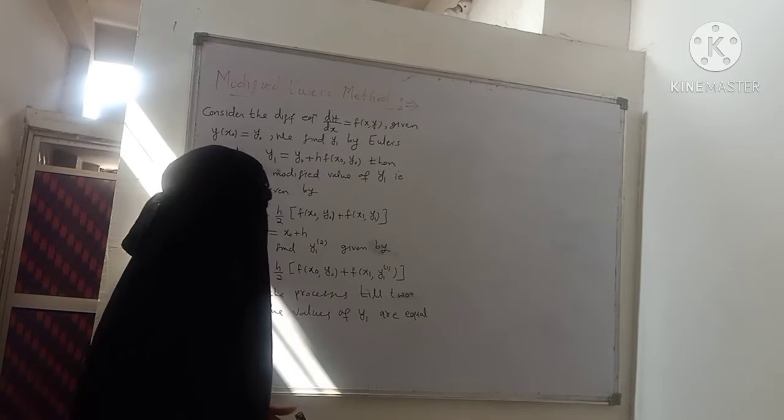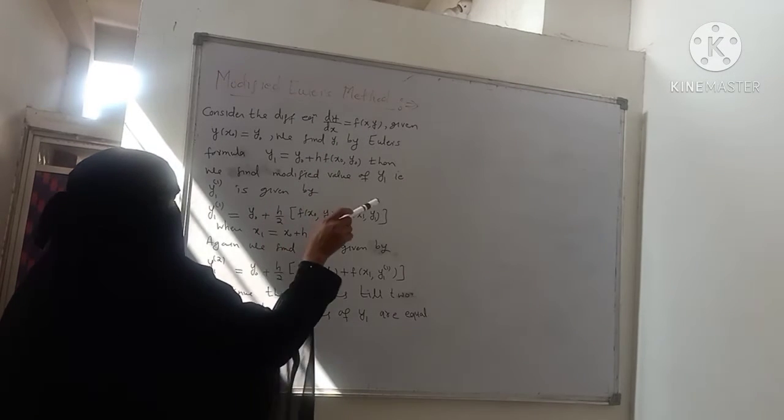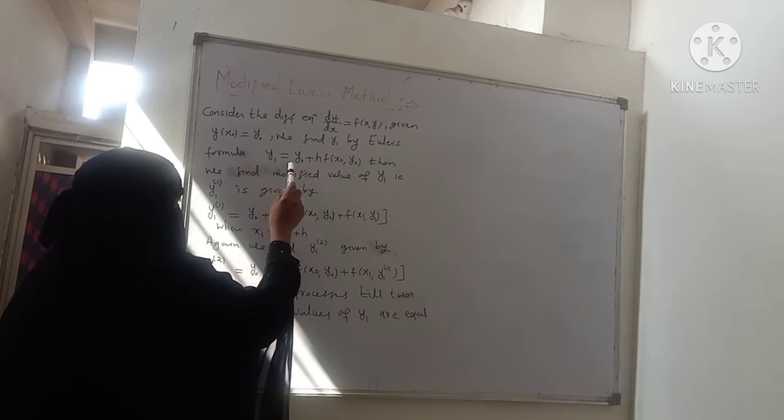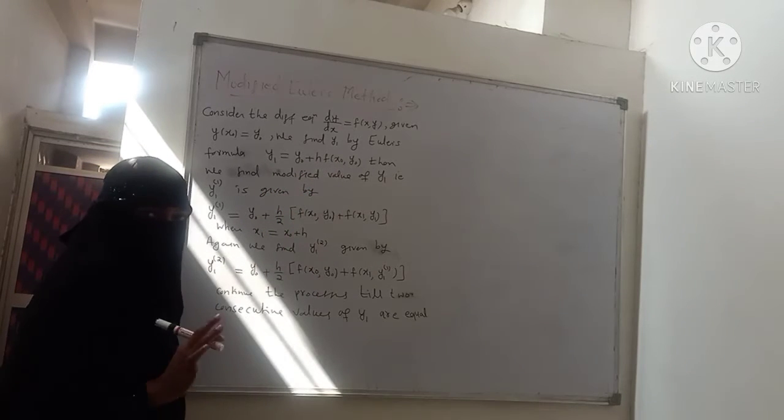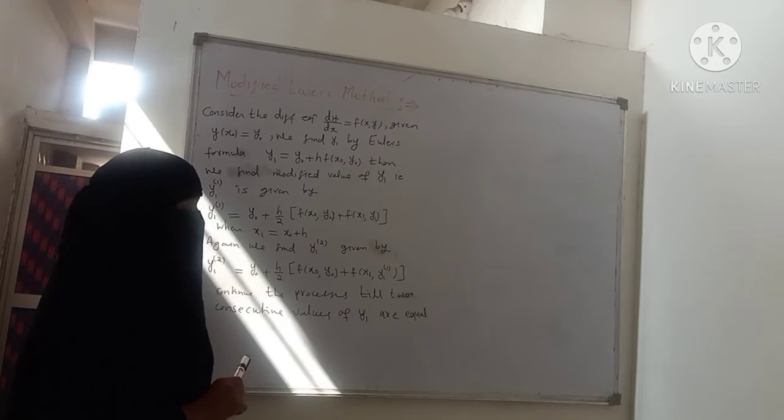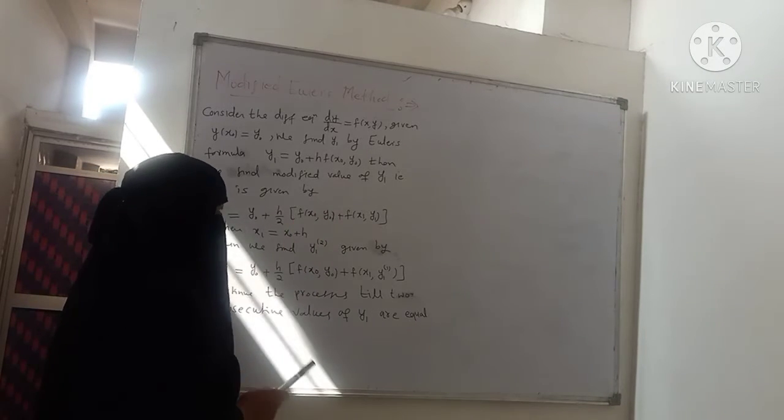Now we have to solve it using Euler's method, Euler's formula: y1 is equal to y0 plus h times f(x0, y0). So first of all, we have to find y1 equals y0 plus h times f(x0, y0).